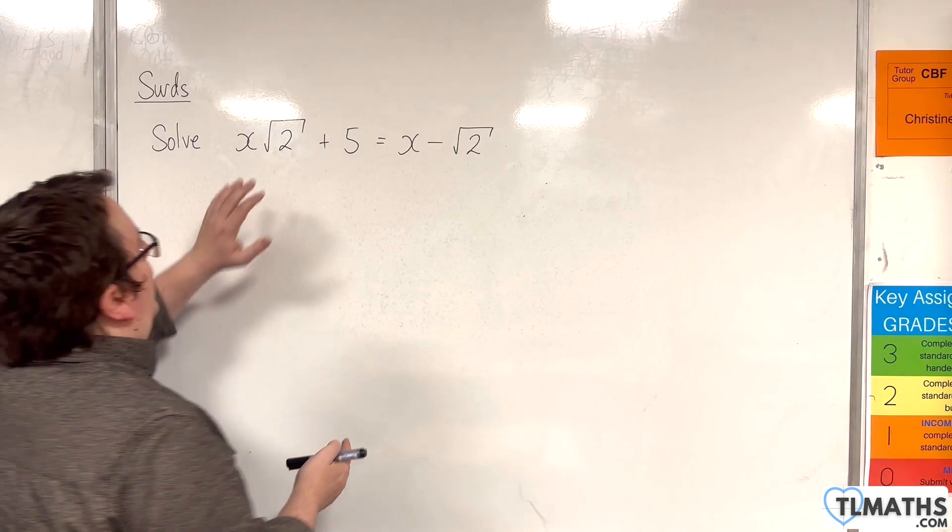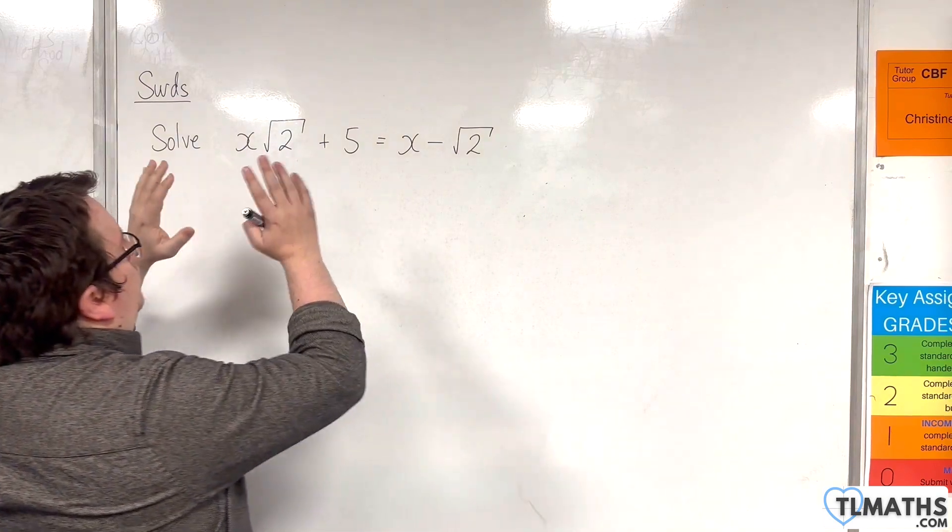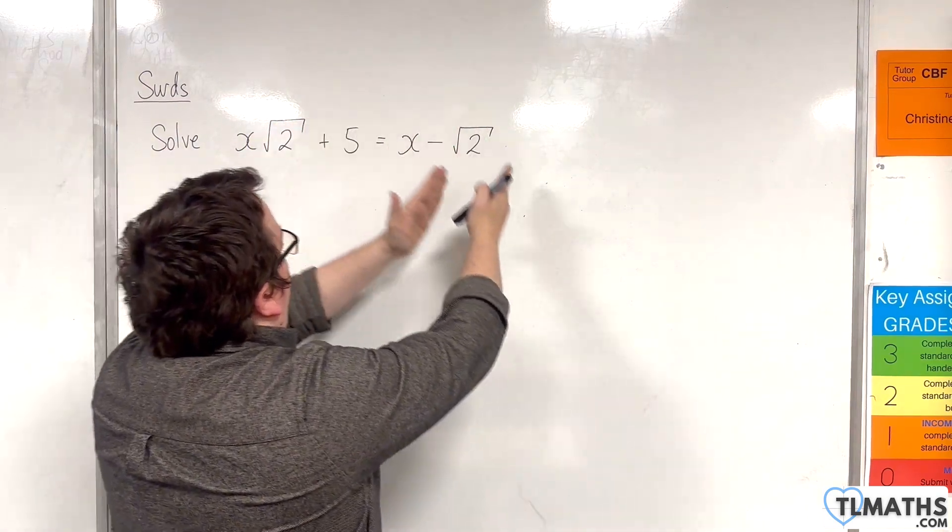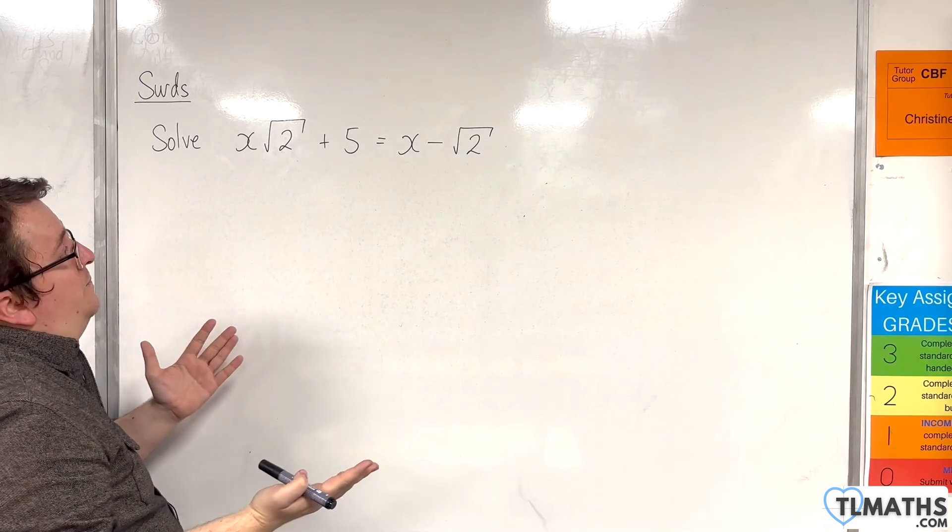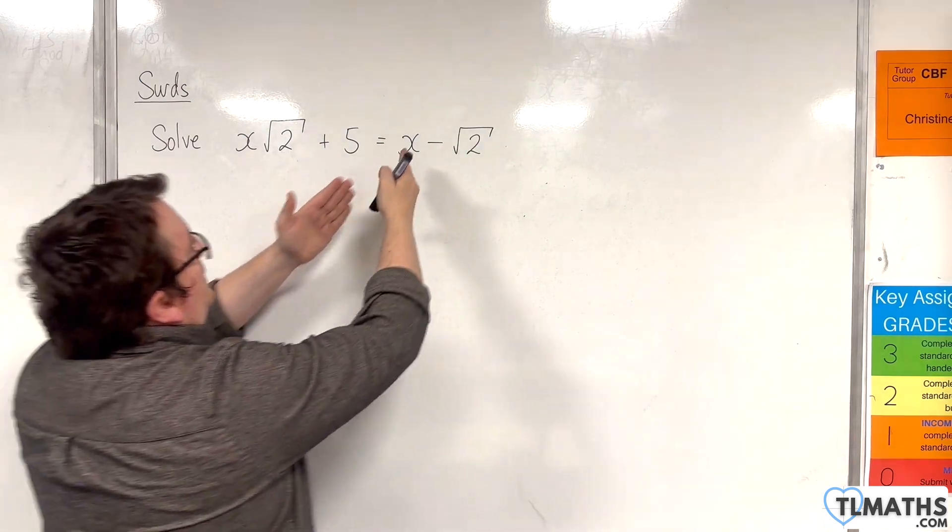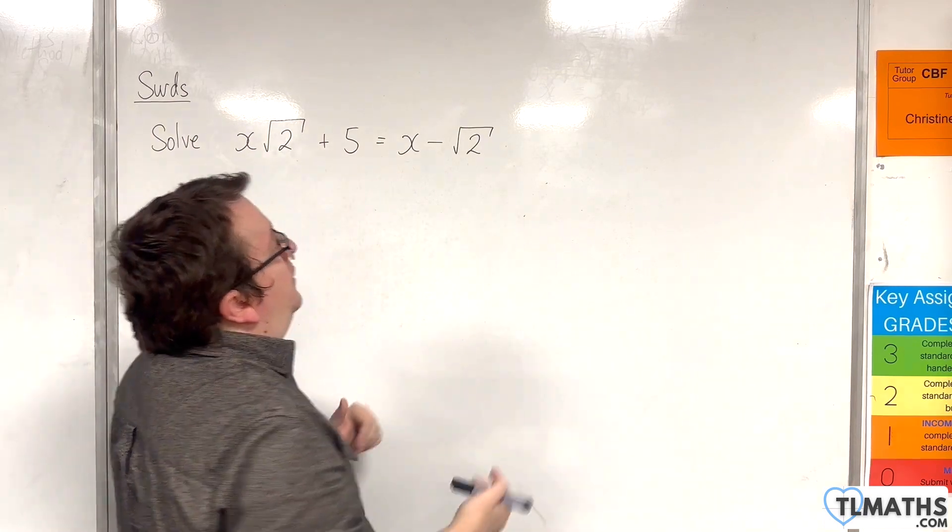So we have the x√2. You could bring that over to the other side and then the √2 over to this side. In fact, that's the way I'm going to do it. Or you could bring that x over to this side and then subtract 5 from both sides.